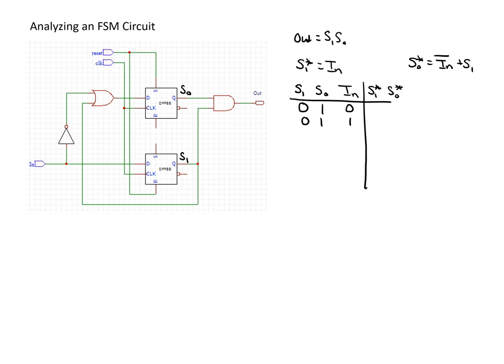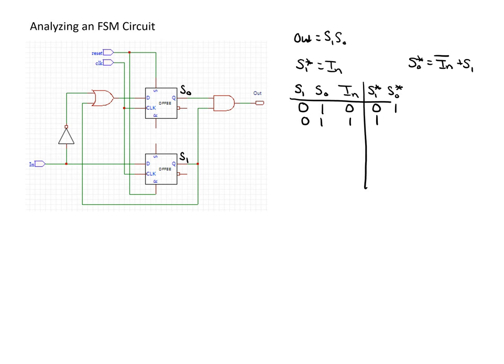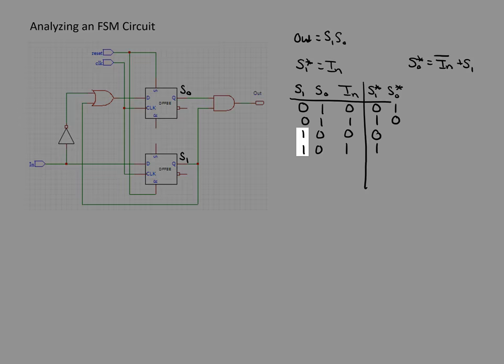From the initial state of S1=0, S0=1, we look at both values of the input. S1* is just equal to 'in', so it's going to be 0 or 1. For S0*, it's (NOT in) OR S1; since S1 is 0 here, we look at 'in', giving NOT in = 1 or 0. Then we look at the state 1,0 for both input values: S1* is again equal to 'in', giving 0 and 1, and S0* is S1 OR (NOT in); since S1 is 1, the next value of S0 is going to be 1 in both instances.